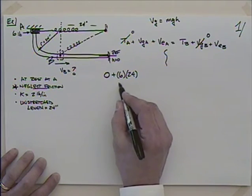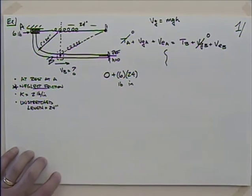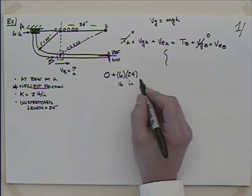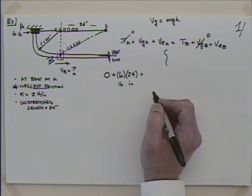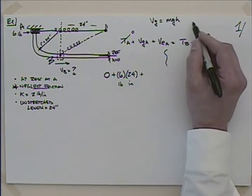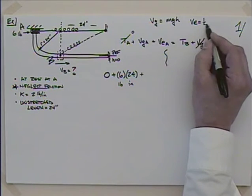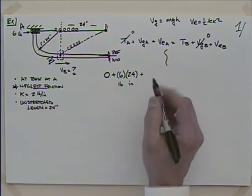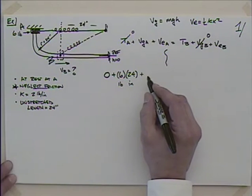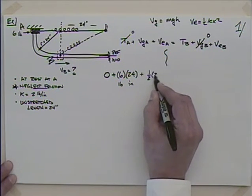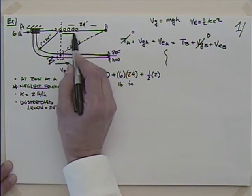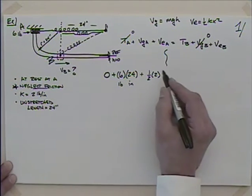If I put the units below it — I have pounds and inches, so pound-inches. That's okay, but I need to be careful because it's not standard. For the elastic energy at A, the spring stretch — in general, elastic energy Ve is one-half kx squared. So I have one-half times 2 times 24 squared, since the unstretched length is 24 and we've stretched an additional 24.